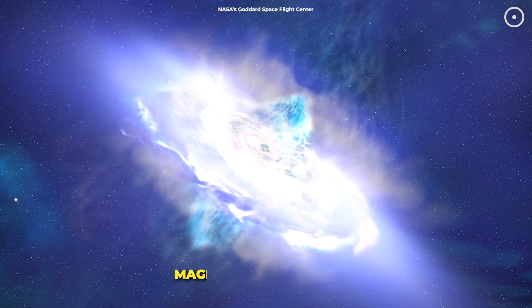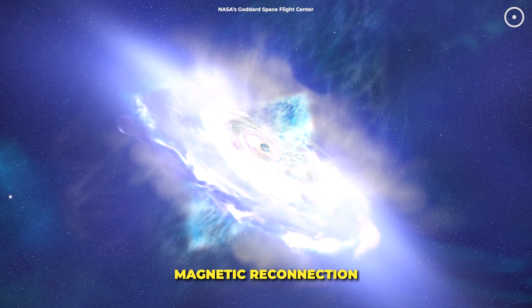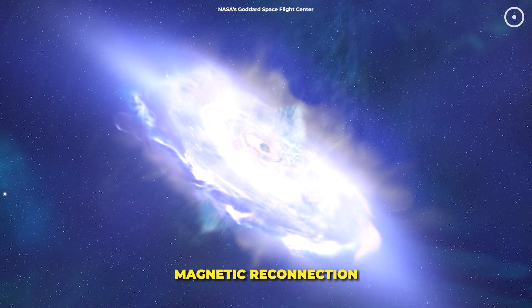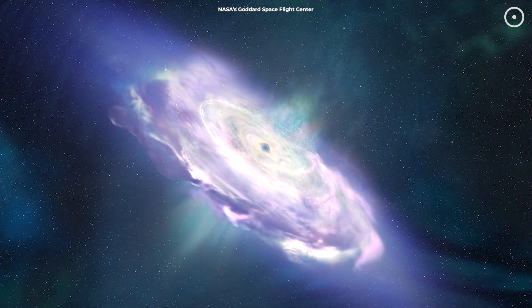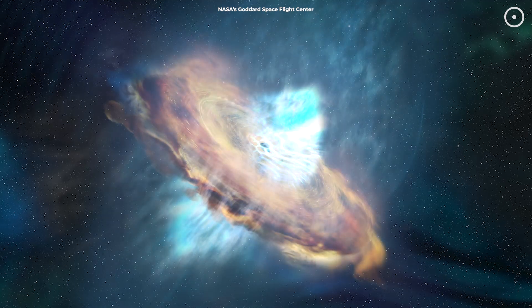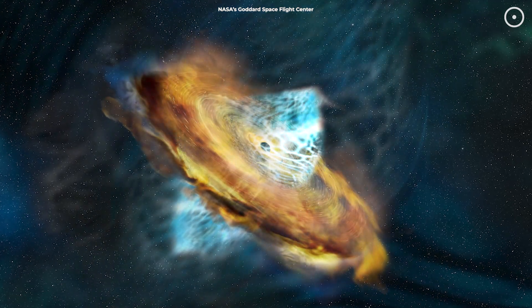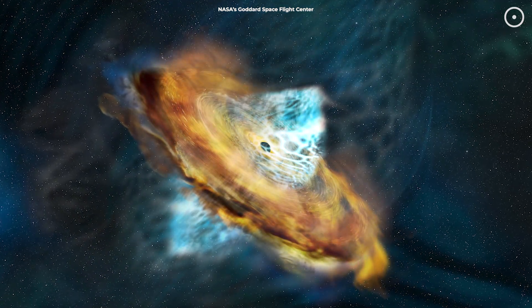Now imagine that happening with magnetic fields so powerful they can accelerate particles to nearly the speed of light. This process is called magnetic reconnection, and it's like cosmic lightning on steroids. When these particles get accelerated to such incredible speeds, they emit powerful bursts of radiation. That's what Webb is seeing as those bright daily flares.